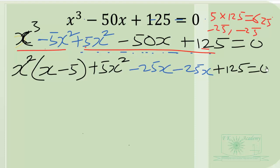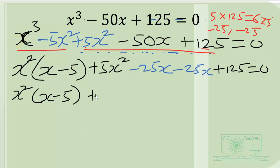Continuing our factorization, we have x squared times (x minus 5), then we have 5x common to both remaining terms.